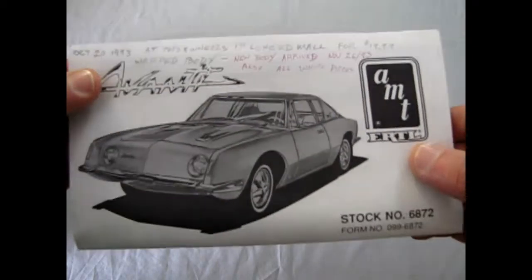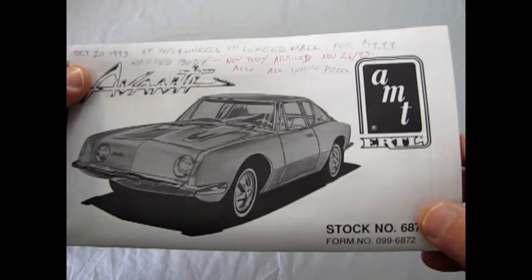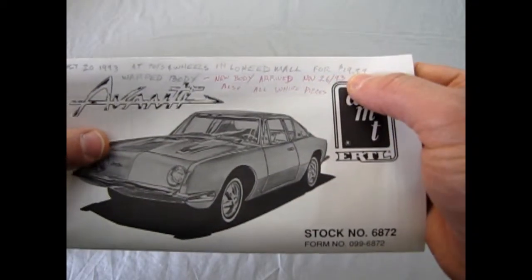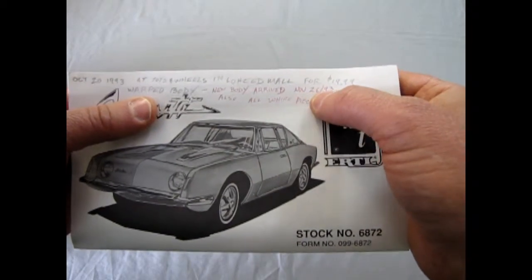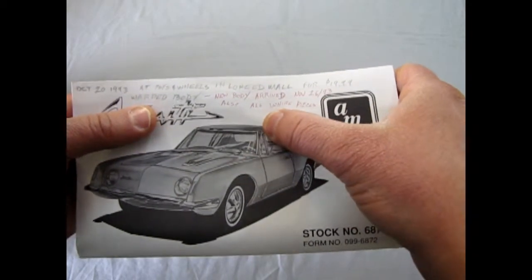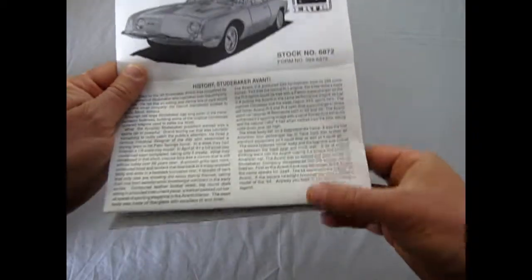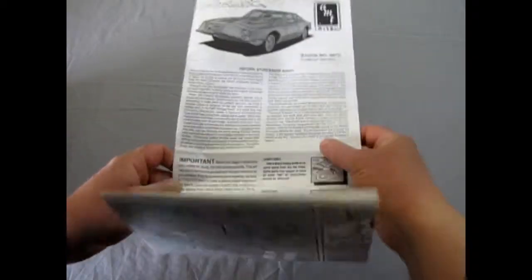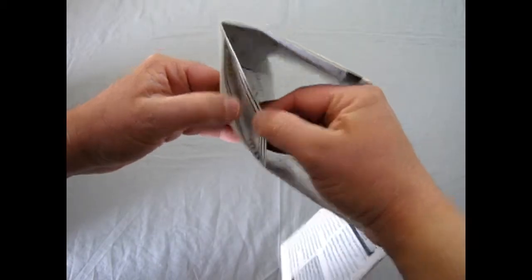So of course I got my history here. October 20th, 1993, bought it at Toys and Wheels in Lougheed Mall. That's in British Columbia. For $19.99. A warped body. New body arrived November 26, 1993. Also all the white pieces, so I could actually build two of these. Now they give you the history right there. These are again the big long pullout instructions. I do believe the kit originally came out in the end of the 1960s.